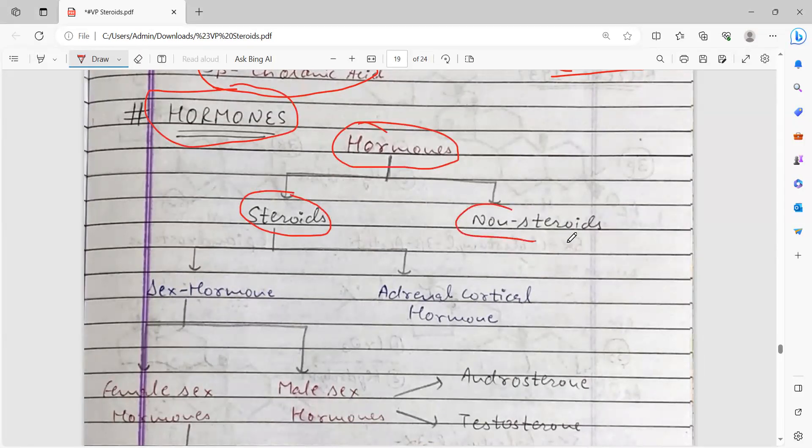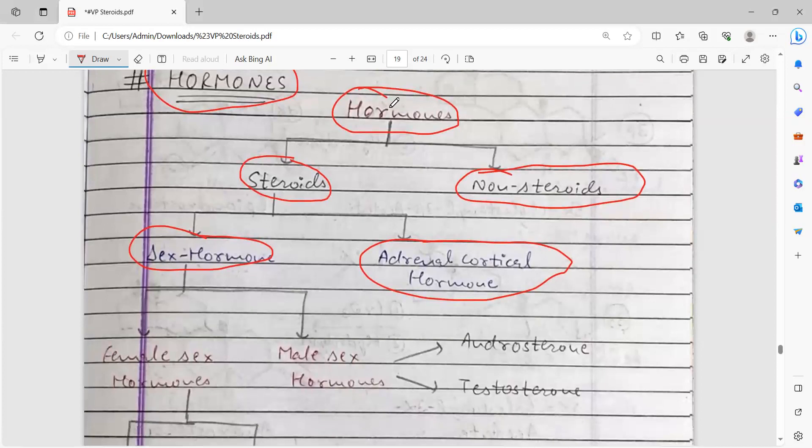Besides non-steroids, steroids are further classified into two types of hormones: sex hormones and adrenal cortical hormones. So hormones are subdivided into steroids and non-steroids. Steroids have two classifications: sex hormones and adrenal cortical hormones.